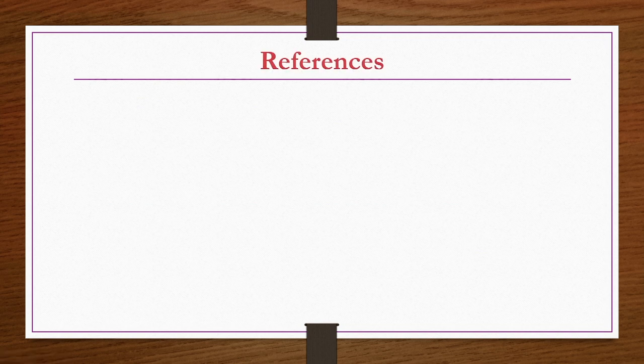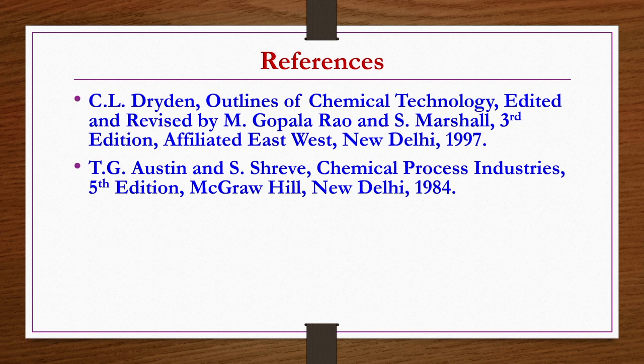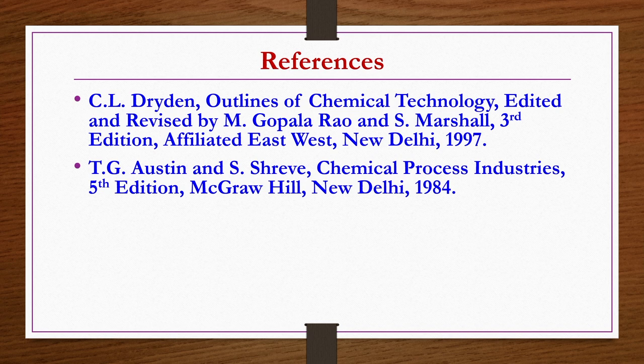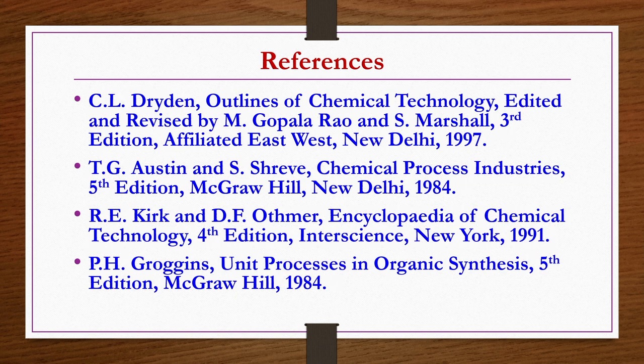References for today's lecture: Outlines of Chemical Technology by Dryden, edited and revised by Gopalrav and Marshall, third edition; Chemical Process Industries by Austin and Sriv, fifth edition; Encyclopedia of Chemical Technology by Kirk and Atmar, fourth edition; Unit Processes in Organic Synthesis by Groggins, fifth edition. Thank you.